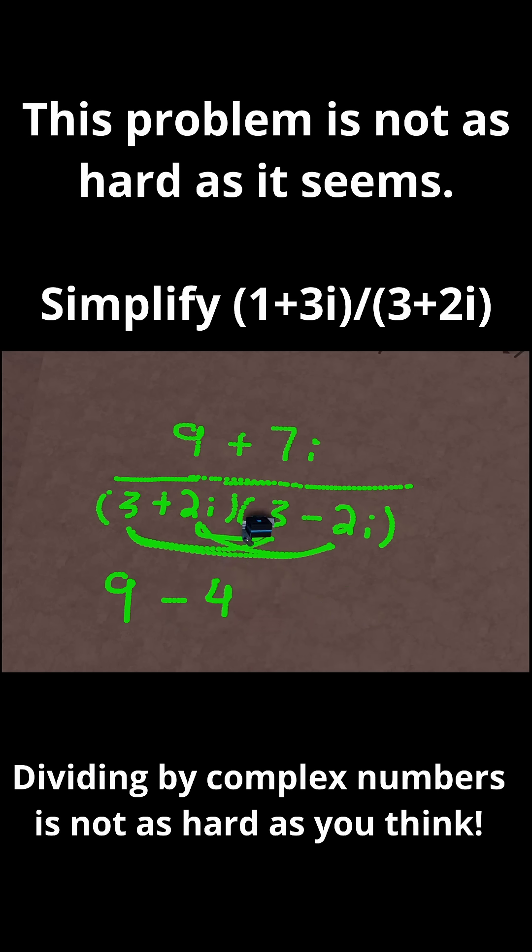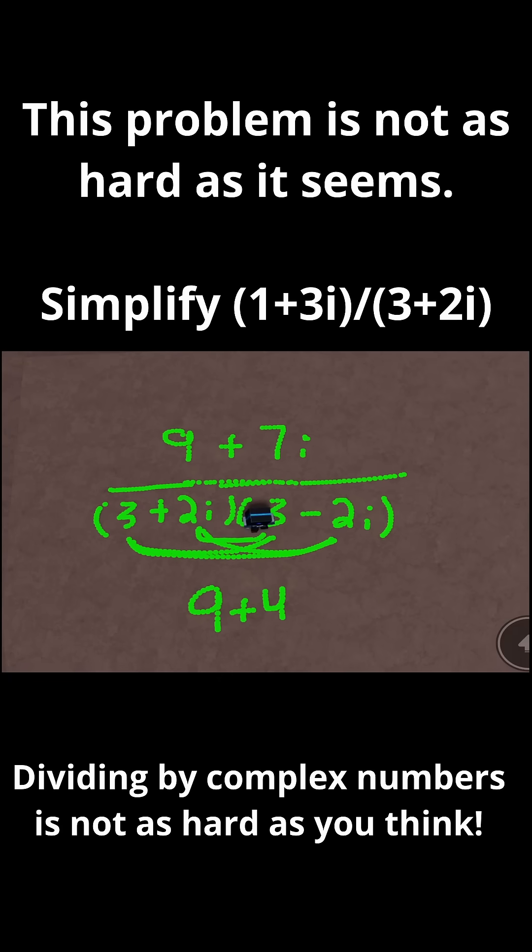i squared is just minus 1. And then minus 4 times minus 1 is plus 4. So I just have 9 plus 4. And 9 plus 4 is 13. So this whole denominator is just 13.